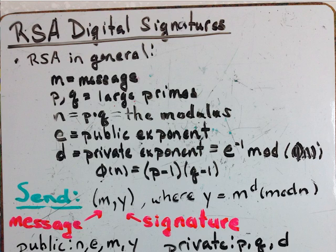In this video I'm going to talk about RSA digital signatures. So for RSA in general, M is the message, P and Q are large primes, N is P times Q, the modulus.